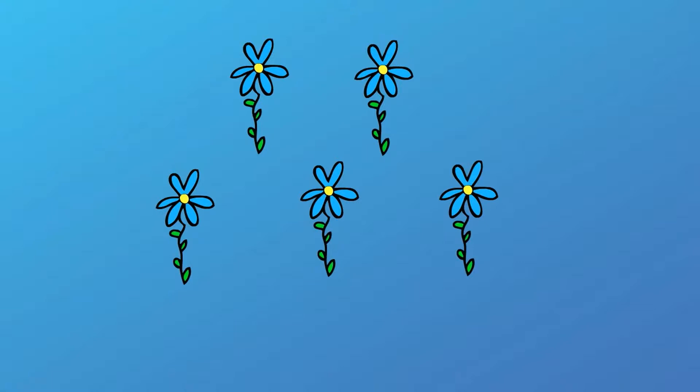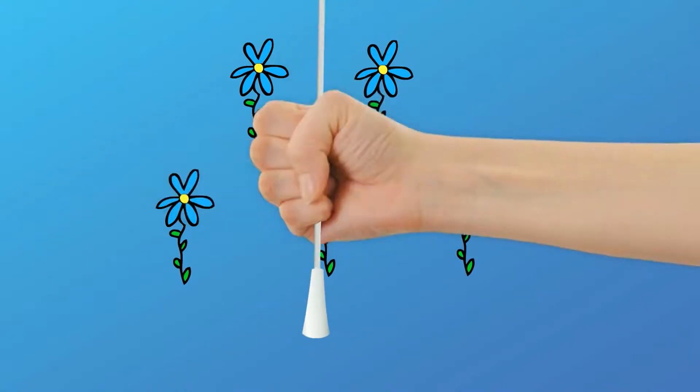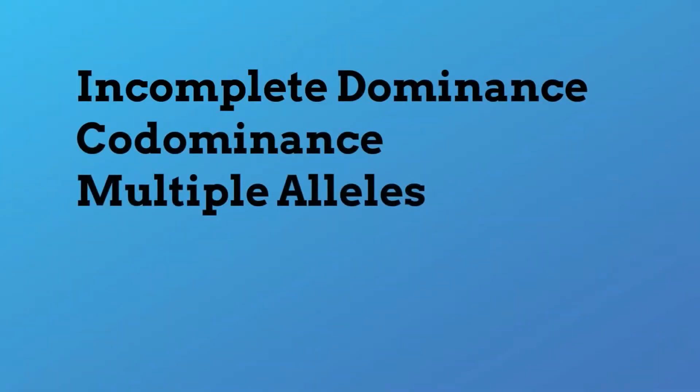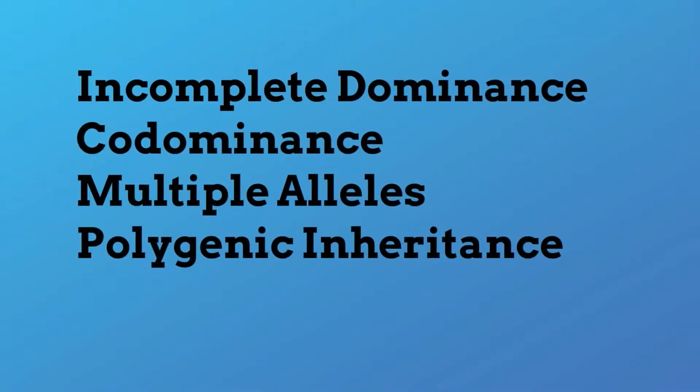Some are even co-dominant. In this video, I'd like to talk about incomplete dominance, co-dominance, multiple alleles, and polygenic inheritance.